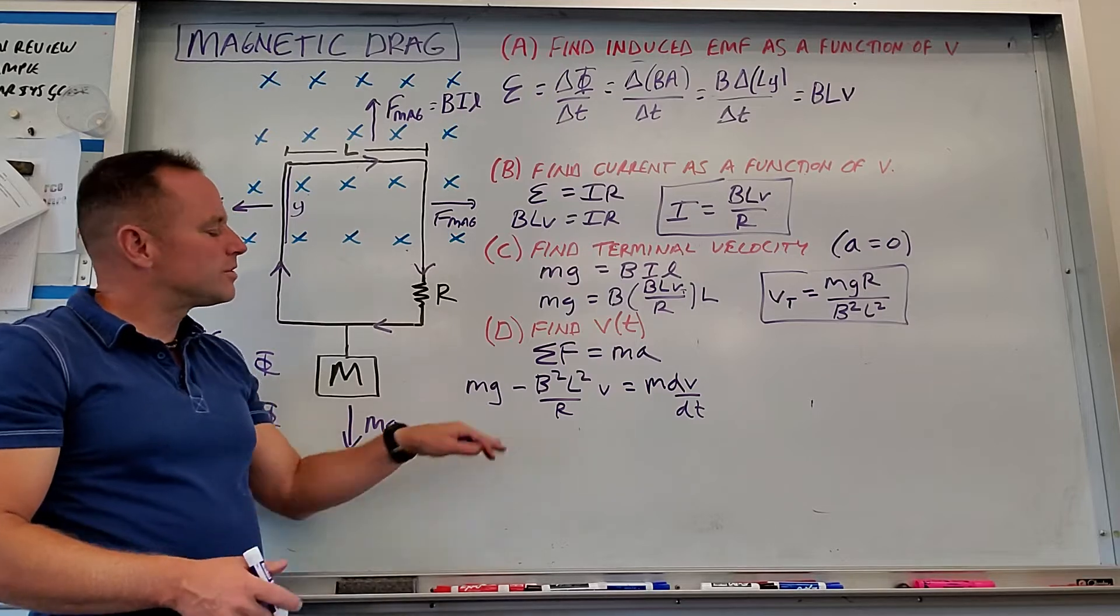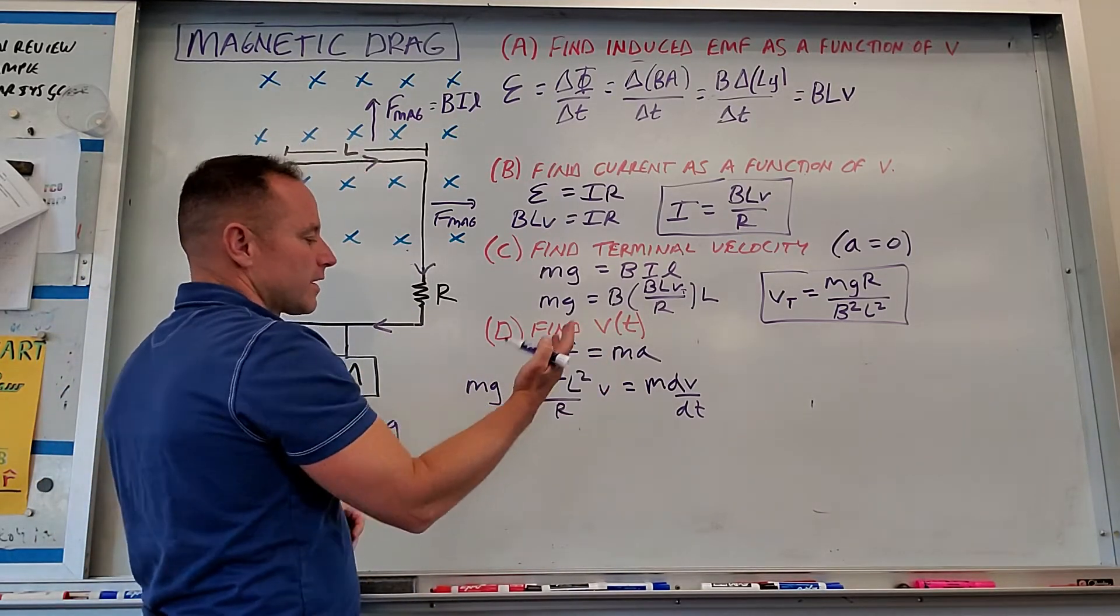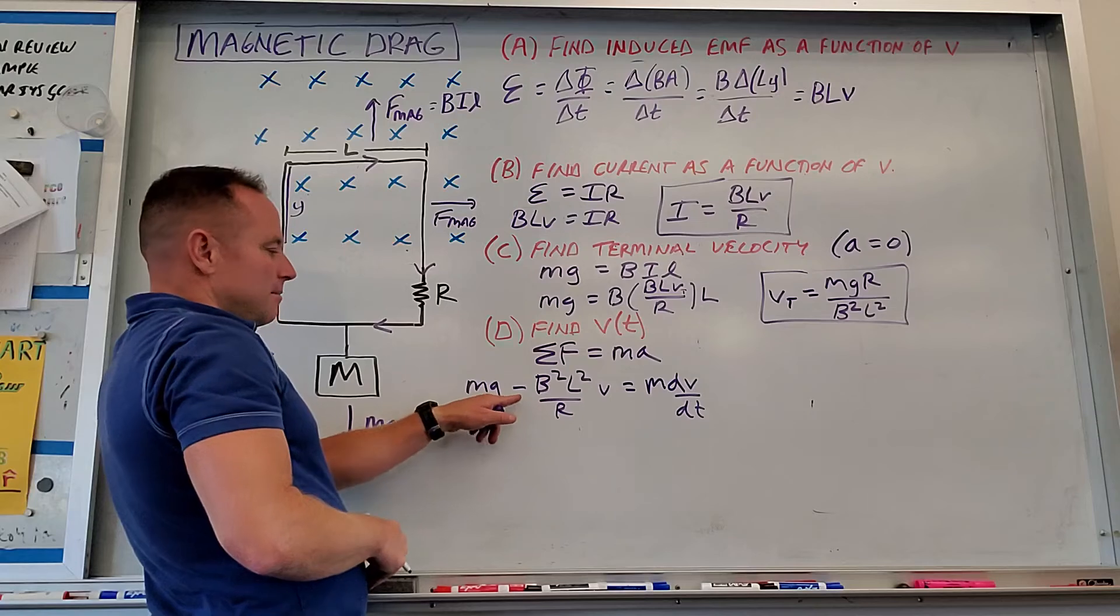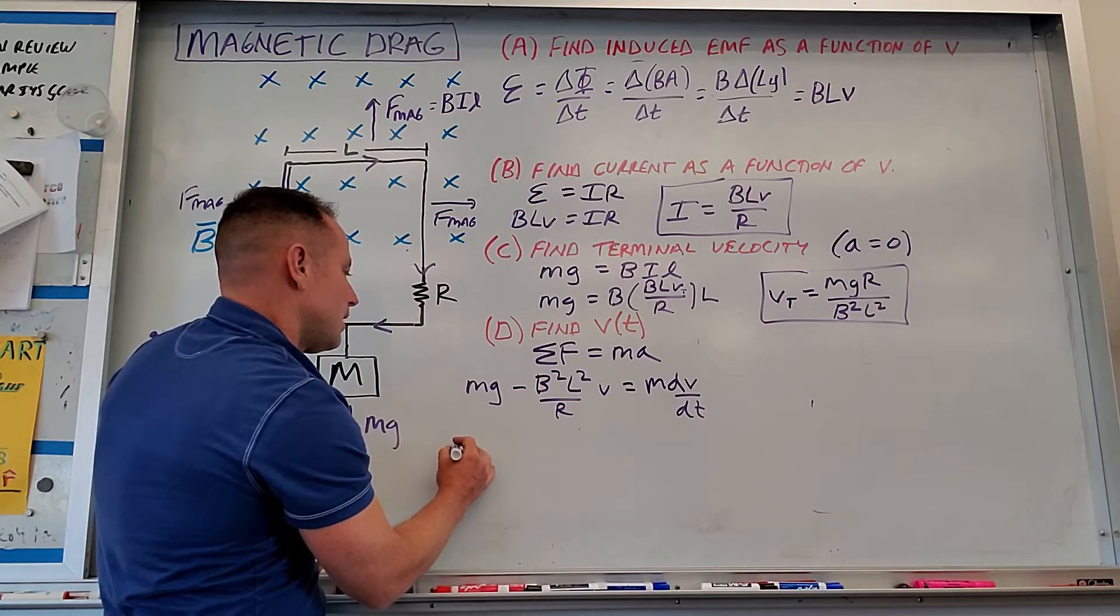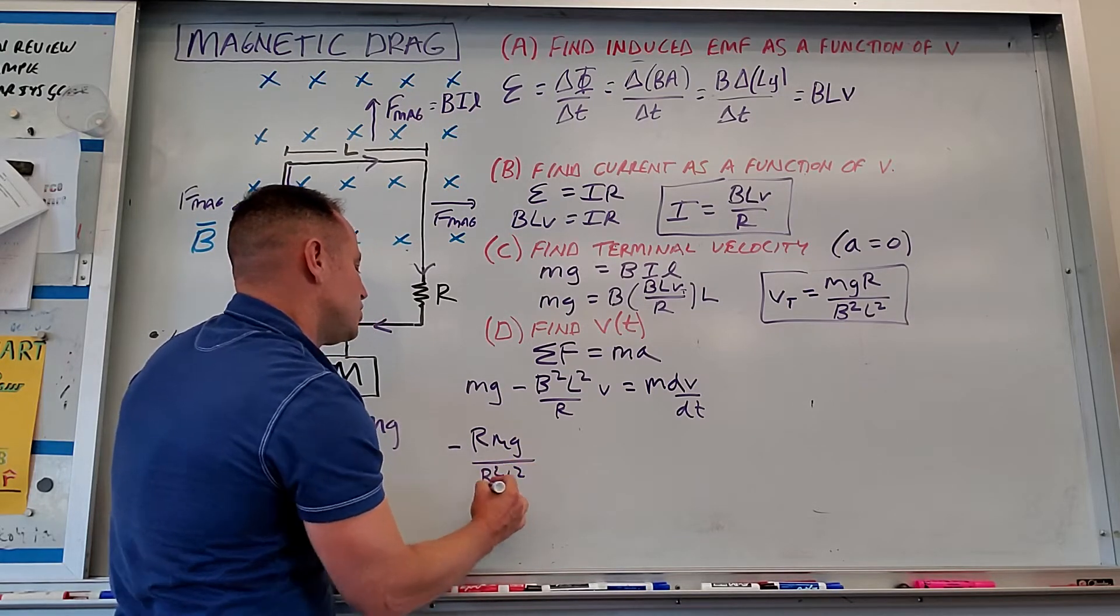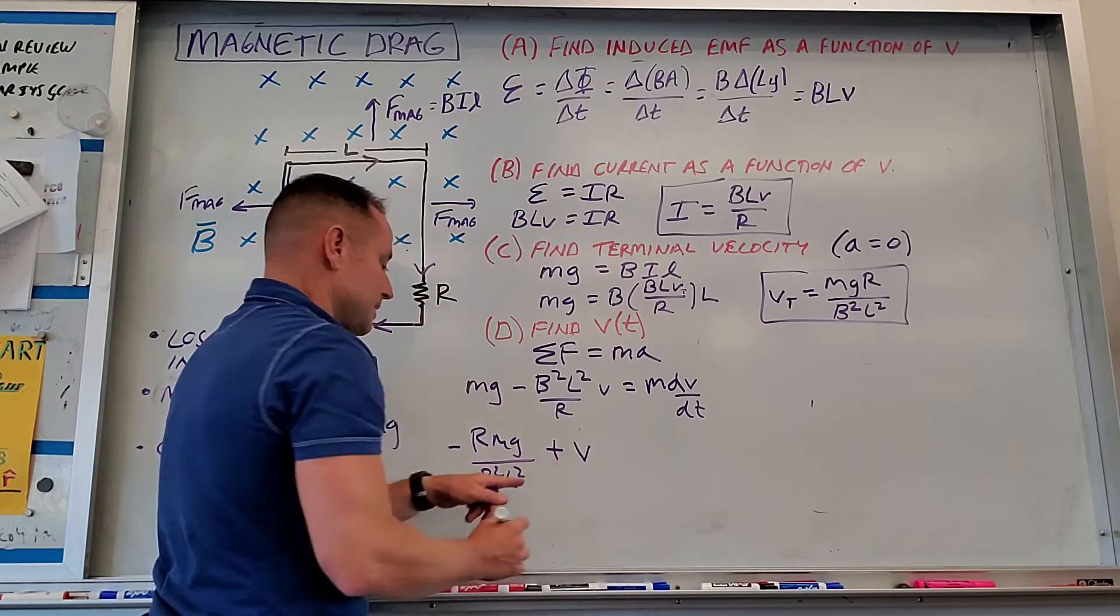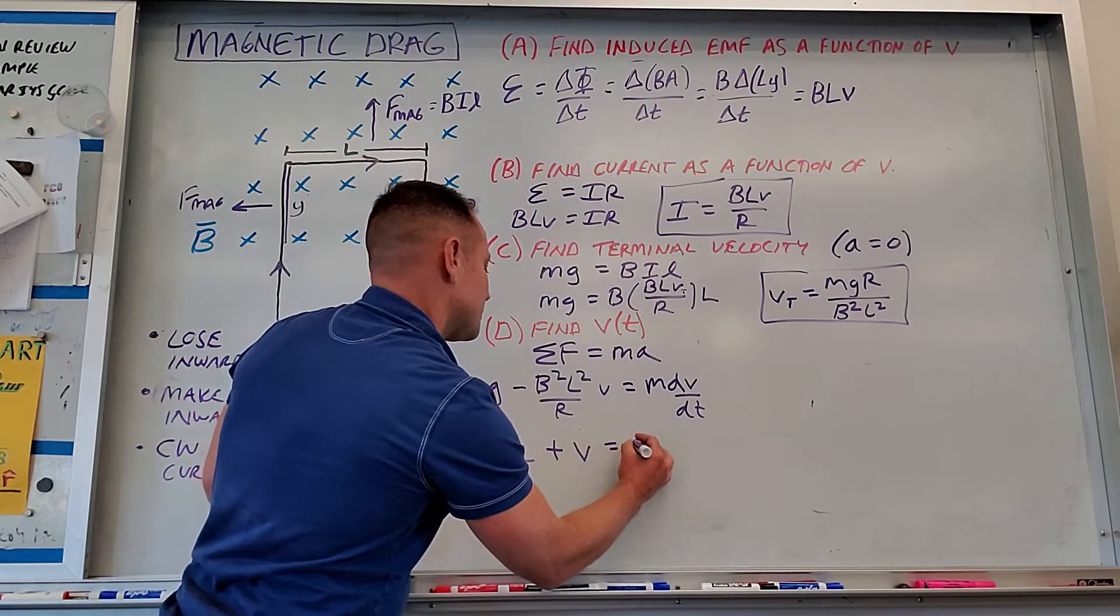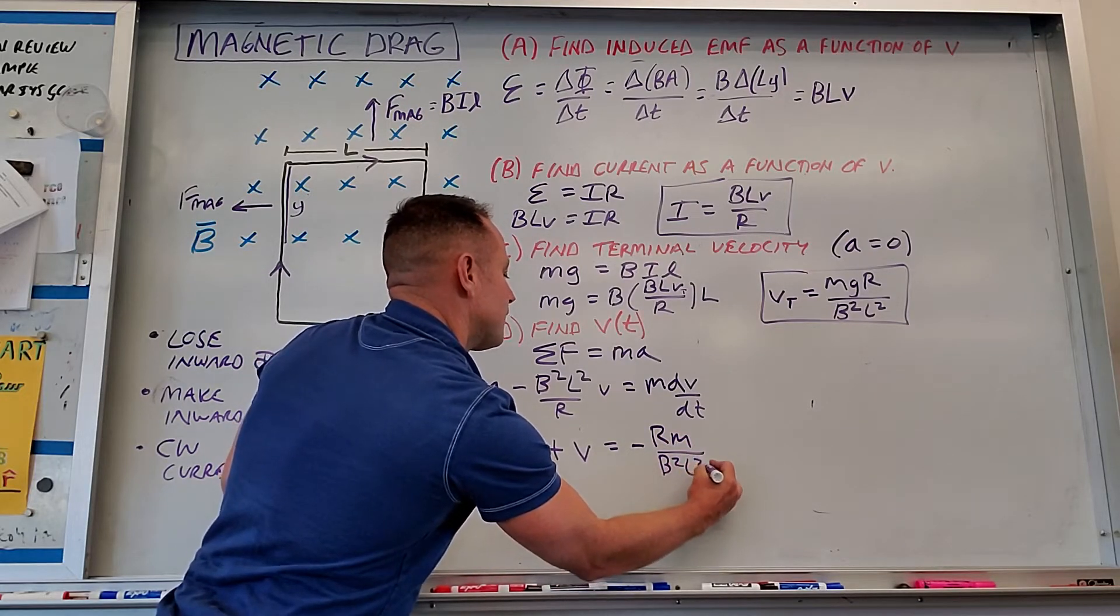So a quick run through, there's different options for how you might want to handle the algebra. What I like to do, just kind of personal style, I like to clear the coefficient on the V. This is definitely optional, but it's something I like to do. Clear the coefficient on the thing I'm trying to solve for. So what I'm going to do is multiply by the reciprocal of this coefficient to just get rid of it here. And so what will happen is this term will become minus RMG over B squared L squared. Again, what I'm doing is I'm multiplying everybody by minus R over B squared L squared. And so by doing that, that'll make this plus V. That's me clearing the coefficient. And then this would be minus RM over B squared L squared, dV/dt.